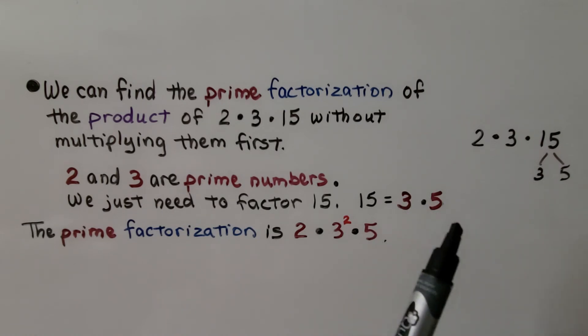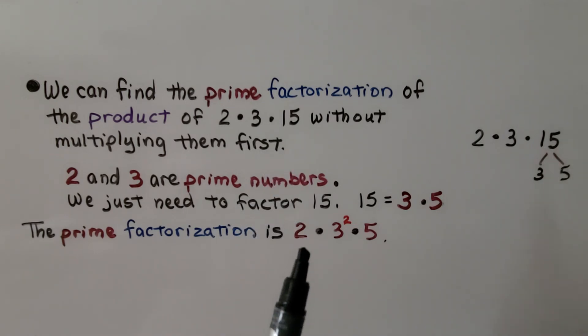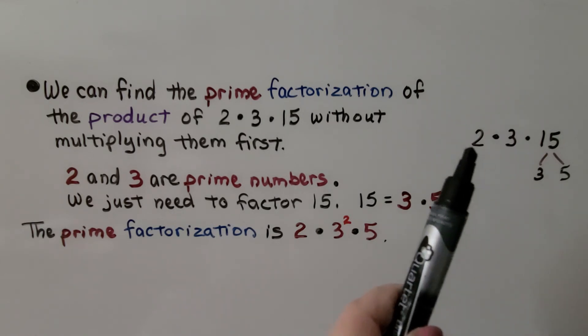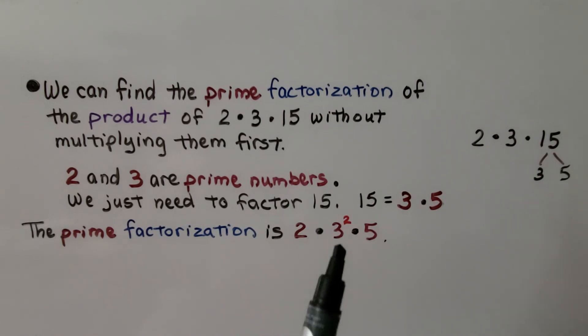These are both prime numbers. So the prime factorization of 2 times 3 times 15 is 2 times 3 raised to the second power times 5. We have a 2, a 3, a 3, and a 5. So we have 2 times 3 raised to the second power times 5.